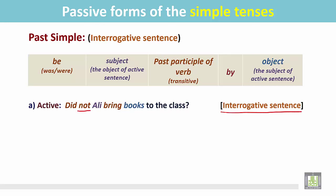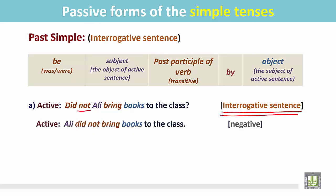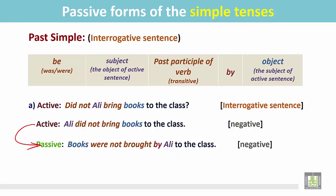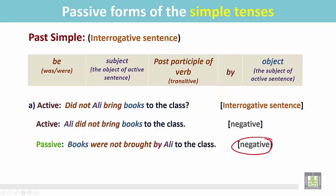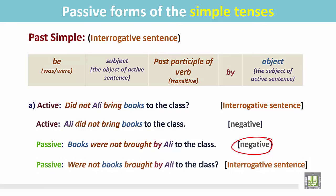'Did not Ali bring books to the class?' — a negative interrogative sentence. First, we change it into a statement: 'Ali did not bring books to the class.' Now we make it passive: 'Books were not brought by Ali to the class.' The object 'books' becomes the subject; since 'books' is plural, we place 'were'; to make it negative, we add 'not'; then the past participle of 'bring', which is 'brought'; then 'by'; and the subject of the active sentence becomes the object 'Ali'. Finally, we make it interrogative: 'Were not books brought by Ali to the class?' — placing the be verb before the subject.